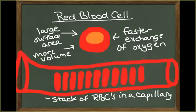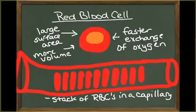The red blood cell has a unique shape compared to other cells in the body. The thin central region and the thicker outer margin give it a large surface area to volume ratio. The red blood cell carries oxygen to the tissues, and the larger surface area to volume ratio allows a faster exchange of oxygen between the interior of the red blood cell and the plasma.